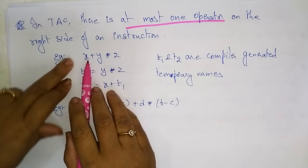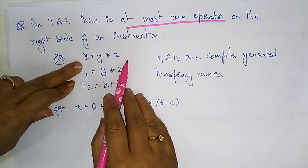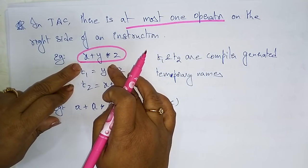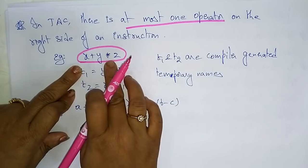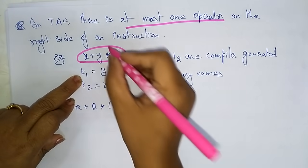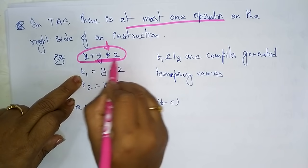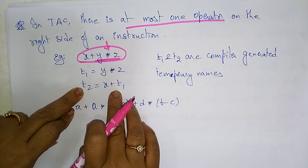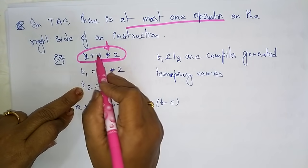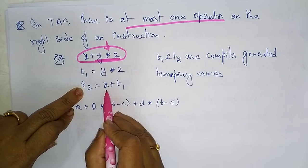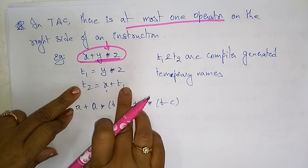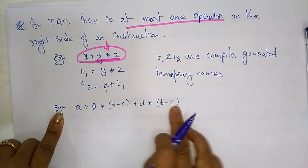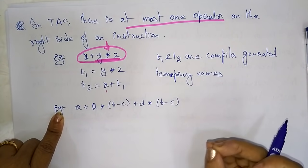Let's take the example: x + y * z. How do we divide this expression into several separate instructions so it can be converted into assembly-level language? We break it as: t1 = y * z, taking y * z as t1. Then t2 = x + t1. So instead of three operands together, here only one operator is on the right side. t1 and t2 are temporary names generated by the compiler.